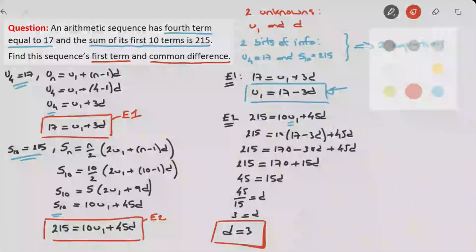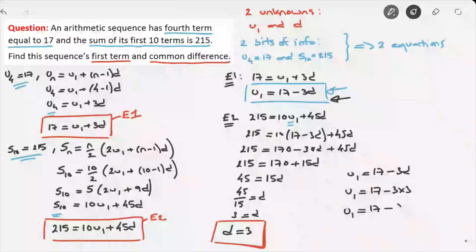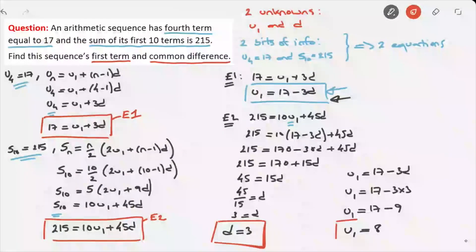The final step is to go back to the expression for u1, which was u1 = 17 − 3d. Since d = 3, we get u1 = 17 − 3×3 = 17 − 9 = 8. I'll box that result as well. And that's how we solve this type of exam question.